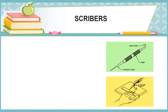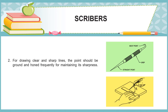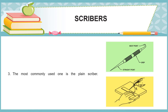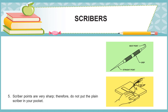Scribers are used to scribe lines to indicate the dimensions of the work piece to be filed or machined. They are made of high carbon steel and are hardened. For drawing clear and sharp lines, the point should be ground and honed frequently to maintain sharpness. The most commonly used one is the plain scriber. While scribing lines, the scriber is used like a pencil so that the lines drawn are close to the straight edge. Caution: scriber points are very sharp — do not put the plain scriber in your pocket.